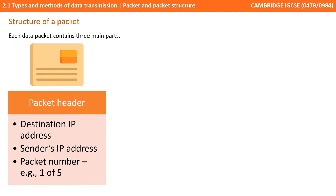First we have the packet header. You can think of this as the front of an envelope. It contains the destination IP address of where the packet has to go to. It also contains the sender's IP address — that's where the letter came from. And it also contains a packet number, or packet sequence number. For example, this is letter one of five.